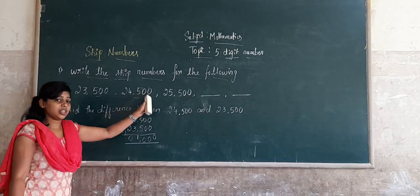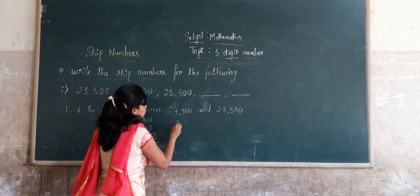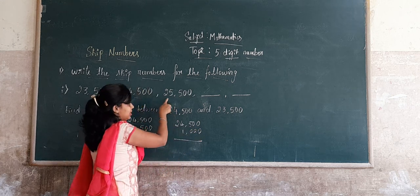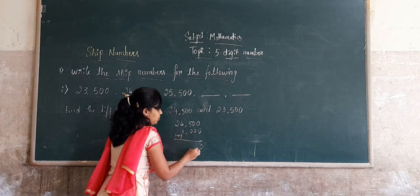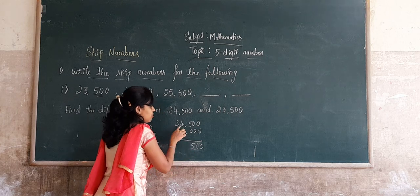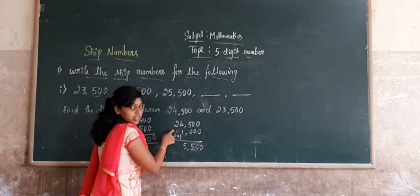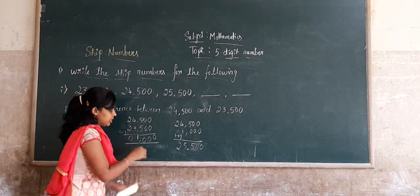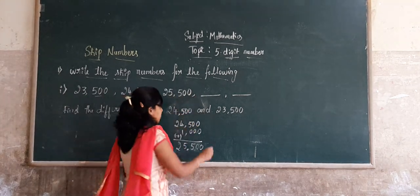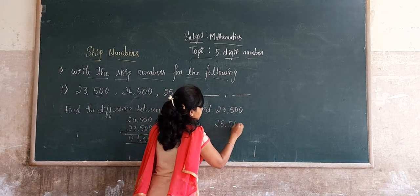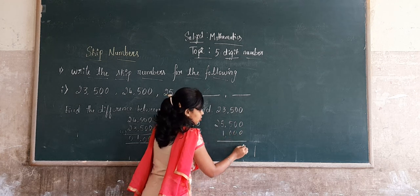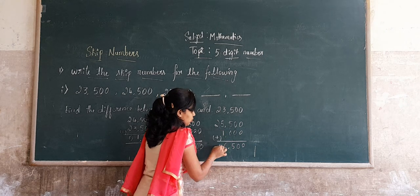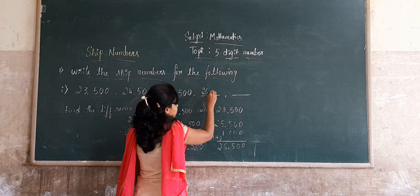This difference of 1,000 is added to 24,500. We get the next skip number: 25,500. Then we add 1,000 to 25,500. Working through: 0 plus 0 is 0, 0 plus 0 is 0, 5 plus 0 is 5, 5 plus 1 is 6, 2 plus 0 is 2. The next skip number is 26,500.